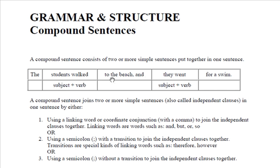Coordinate means we coordinate this one to this one, and is a coordinate conjunction that brings these two sentences together. So we have, the students walked to the beach, pause, comma, and they went for a swim. Much better transition. The students walked to the beach, and they went for a swim.